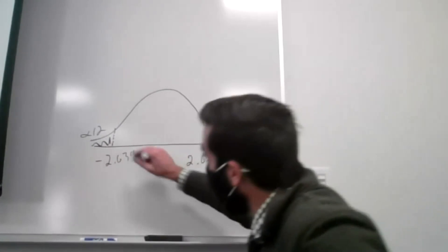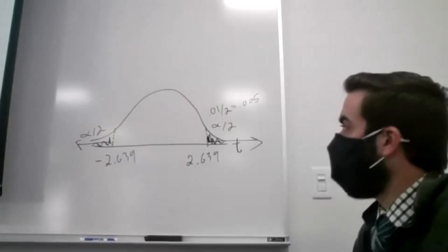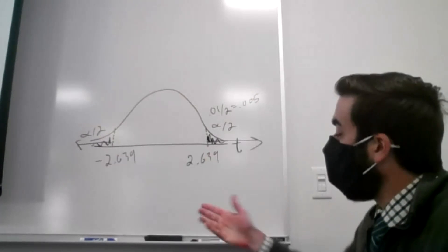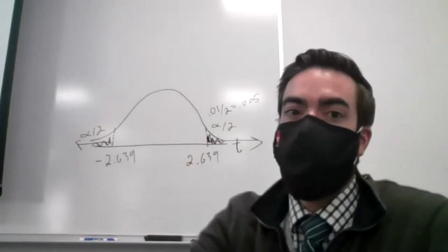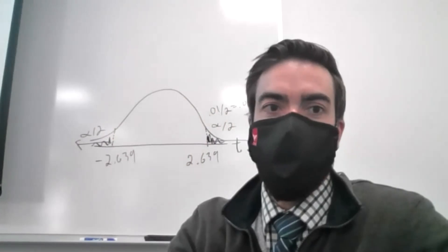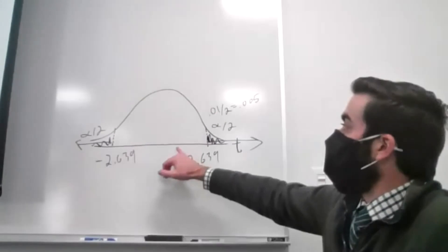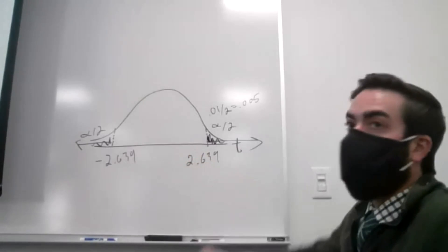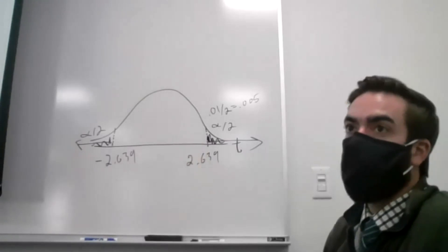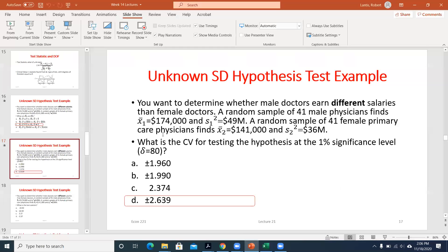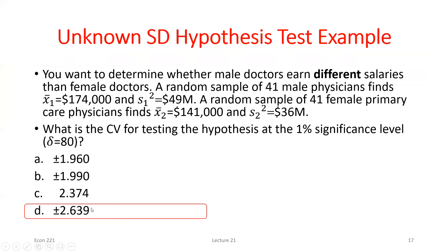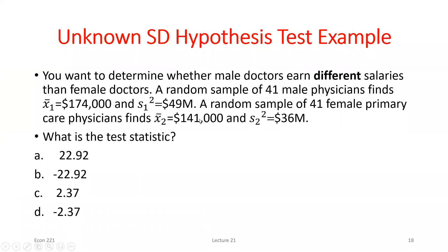When you think about our rejection region, it's anything more extreme than those critical values — larger in absolute value, arrows pointing into the tails. Now we just need to find our test statistic. If it falls in that rejection region, I reject; if not, I fail to reject. Another way to think about this: if I see sample evidence more than 2.639 standard deviations away from the assumed true difference, then I can reject.